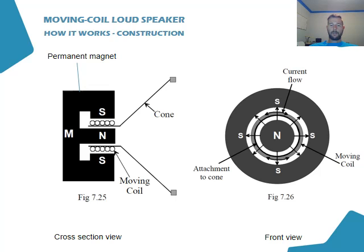We've got a permanent magnet, which is cylindrical as you can see in this diagram. We've got a cone that slips in between the parts of the magnet, and also a moving coil. This coil is just wire that's wrapped around part of the speaker.